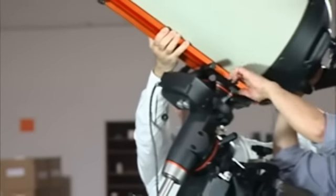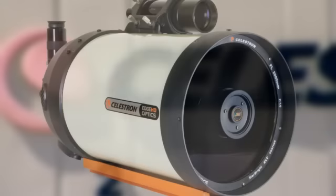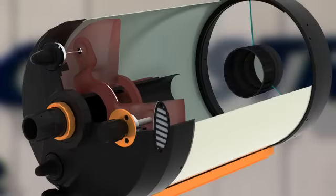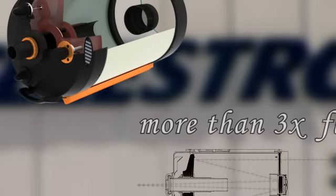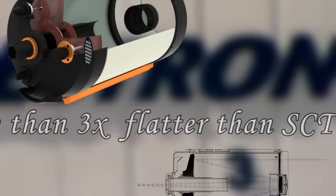This, combined with steady growth of CCD chip sizes, created a strong demand for coma-free flat-field optics among amateur astrophotographers. In response to this demand, Celestron designed this revolutionary optical system to produce a focal plane more than three times flatter than a standard Schmidt-Cassegrain telescope, and dramatically flatter than other competing coma-free designs.